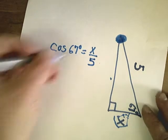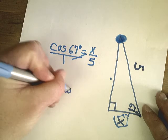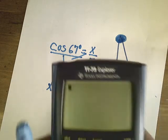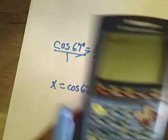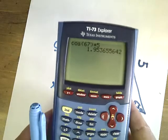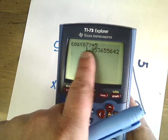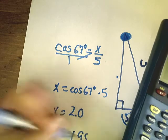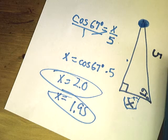Cosine(67°) is the angle measure. I set that equal to x over 5, since the number on my finger goes on top. Cross products: 1 times x equals cosine(67°) times 5. I type second, trig, cosine, 67 degrees, times 5. My answer is approximately 1.955 — or rounded to 2.0. Both answers are okay depending on where they tell you to round.